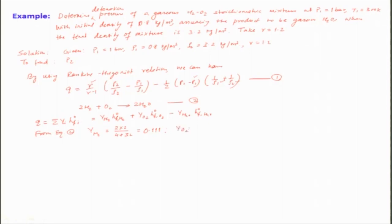The mass fraction of oxygen is 1 − 0.111 = 0.889. On the product side, the mass fraction of water is 1, since only water is present. We also need the heats of formation from the thermochemical table. For hydrogen and oxygen at standard state, hf° = 0. The hf° of water is −13,434 kJ/kg.